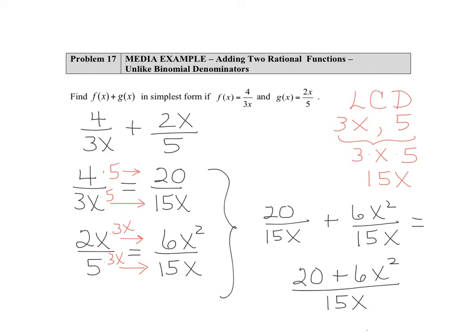I note that in the numerator each term is divisible by 2, so we could factor out a 2, but it wouldn't reduce with the 15 in the denominator. So we're going to just leave our answer as 20 plus 6x squared divided by 15x.